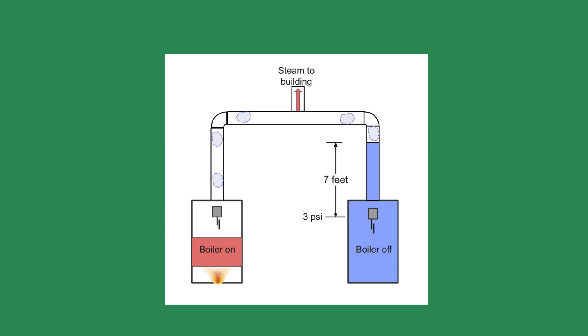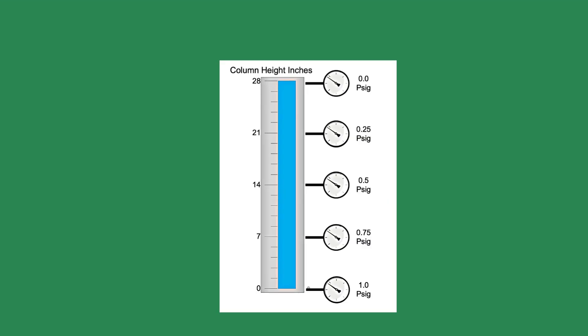When the elevation of the water rose about 7 feet above the pressure control, the weight of the water column in the pipe fooled the pressure control into thinking the boiler was up to pressure. If you think about a hydronic system, it takes one pound of pressure to raise water 2.3 feet. This column of water kept the spare boiler off.